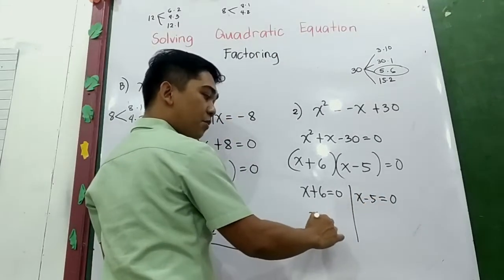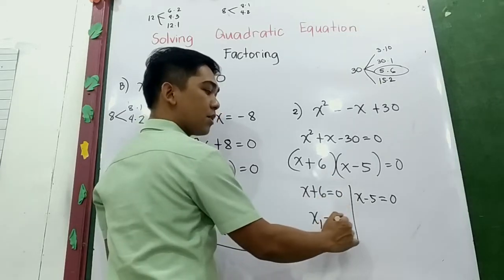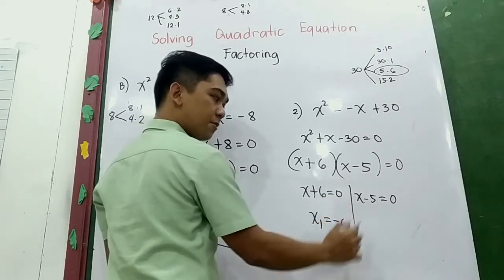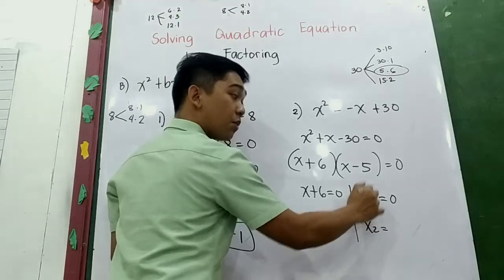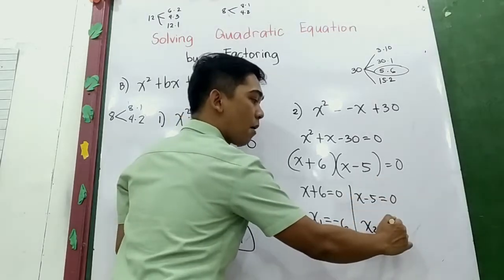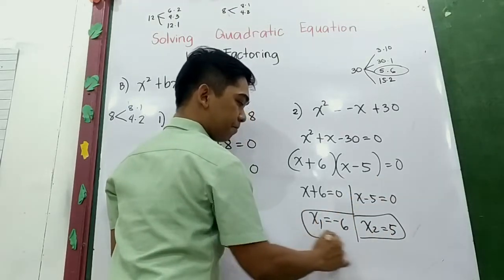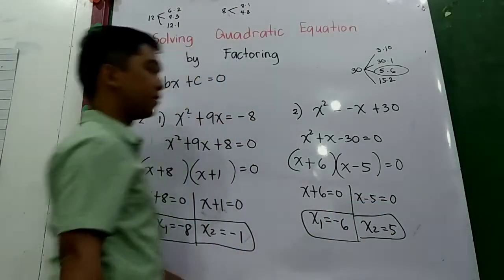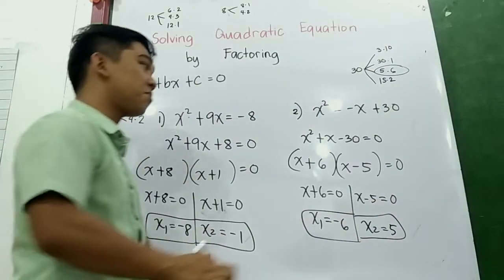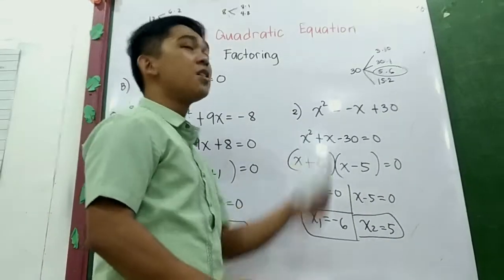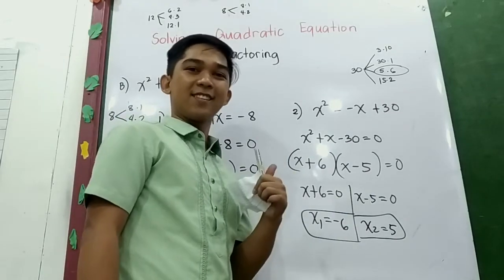So x + 6 = 0 gives x₁ = −6, and x − 5 = 0 gives x₂ = 5. You can check your answers by substituting back into the original equation.